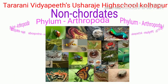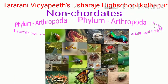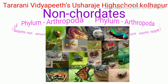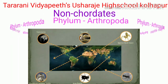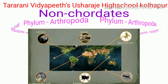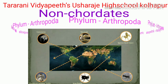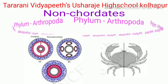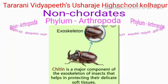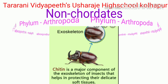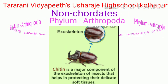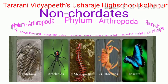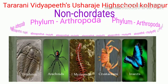Phylum Arthropoda: these animals have jointed appendages, hence they are called arthropods. Planet Earth has the highest number of animals from this phylum, making it the largest phylum with highly successful animals in the animal kingdom. These animals are found in all types of habitats, ranging from the deepest oceans to the highest mountains. The body is triploblastic, eucoelomate, bilaterally symmetrical, and segmented. A chitinous exoskeleton is present around their body. These animals are unisexual. Examples include crab, spider, scorpion, millipede, centipede, cockroach, butterfly, and honeybee.